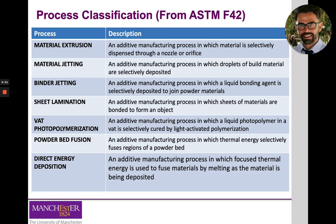Binder jetting is quite different from material extrusion. In this case, the material is in the form of a powder dispensed onto the building platform, and the print head selectively dispenses a liquid adhesive to bind the powder particles together and form layers. The loose powder surrounding the part can serve as support material for overhanging structures, and importantly, much of this powder can be recycled and reused to build other parts.